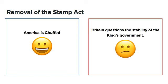America was absolutely thrilled — they had actually won against the British. They were able to communicate to the British that they didn't want this to occur, and the British listened. In the process, they had overthrown George Grenville, who had previously introduced taxes and acts that really hindered the Americans. So the Americans had finally been heard, and it was fantastic for them.